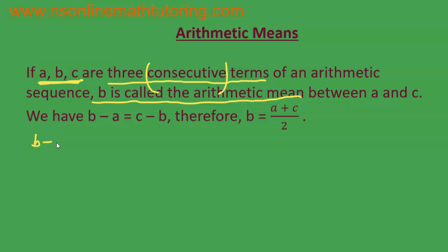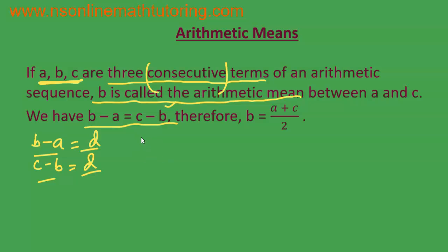If we take the first two terms, we have b minus a, which should equal d. And if we take the last two terms, it will be c minus b, which should also equal d. Since both are equal to d, we equate them: b minus a is equal to c minus b. Adding b to both sides gives 2b minus a equal to c, then adding a to both sides gives 2b equal to a plus c.